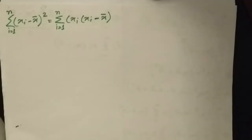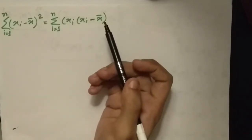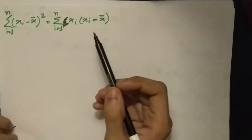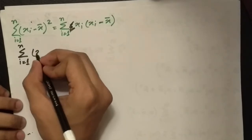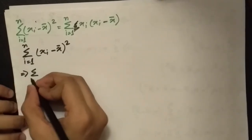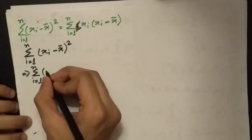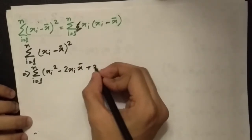Now we're going to prove the second equation: Σ(xᵢ - x̄)² = Σxᵢ(xᵢ - x̄). Taking the left-hand side and applying the formula (a - b)² = a² - 2ab + b², we expand to get summation from i = 1 to n of (xᵢ² - 2xᵢx̄ + x̄²).